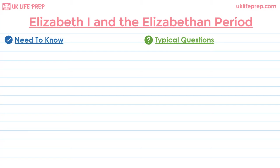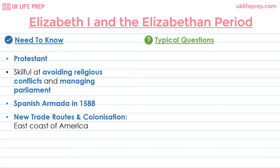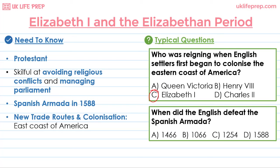One of the most common historical topics assessed is Elizabeth I and the Elizabethan period. Elizabeth I was a Protestant and one of the few monarchs who avoided religious and political conflicts. She is most famous for her defeat of the Spanish Armada in 1588, which was a fleet of ships sent by Spain to restore Catholicism. Her reign, known as the Elizabethan period, saw rapid expansion of the British Empire, with new trade routes established and the colonization of the east coast of America. A typical question asks: who was reigning when English settlers first began to colonize the eastern coast of America? The answer is Elizabeth I. Another asks: when did the English defeat the Spanish Armada? The answer is 1588.